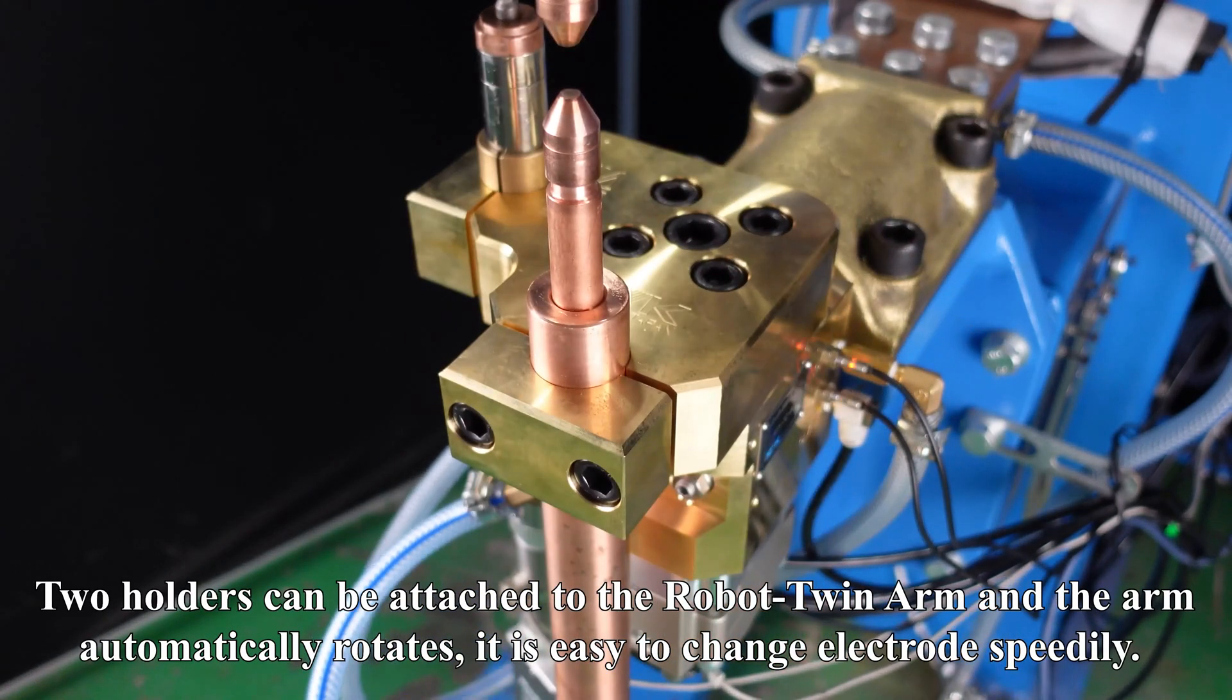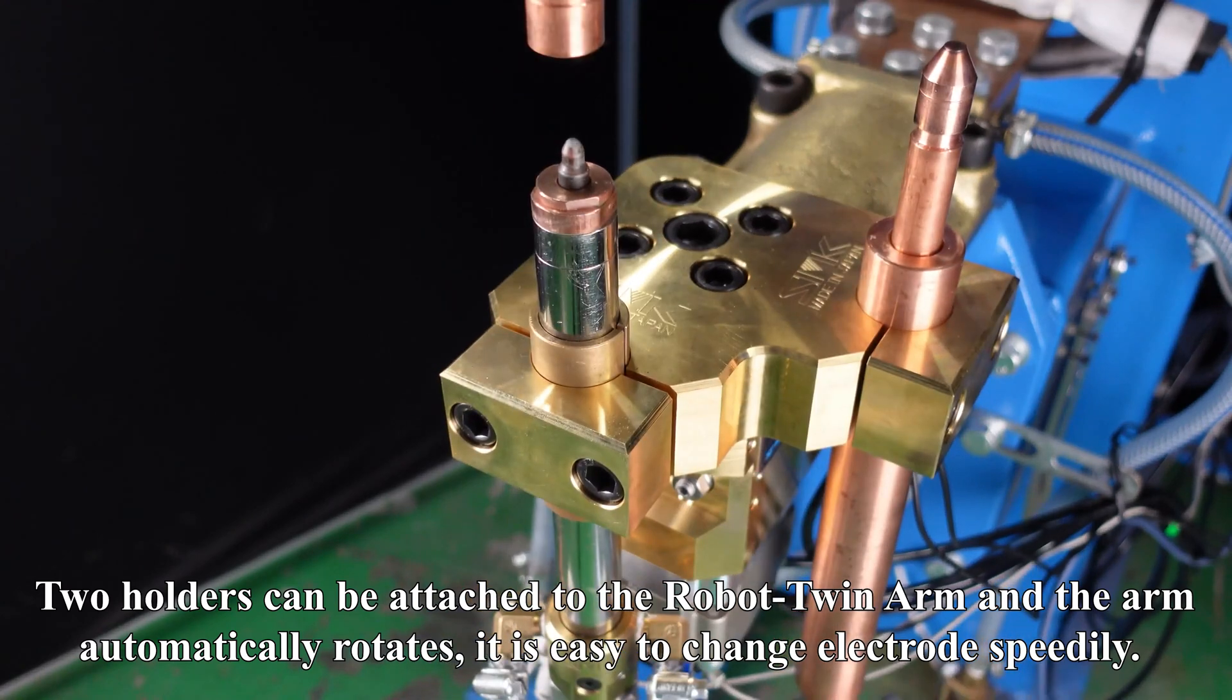Two holders can be attached to the robot twin arm and the arm automatically rotates. It is easy to change electrodes speedily.